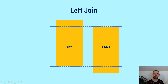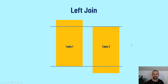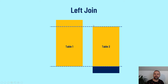When we complete a left join, we bring over all of the records from table one and only the corresponding records from table two, because table one sits on the left. The records from table two that don't match get dropped, and those fields will be filled in as blank values to their corresponding matches in table one.